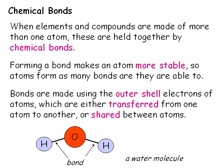The simple answer to why chemical bonds form between atoms is because they can. Atoms use their outer shell electrons to form bonds, becoming more stable as a result. The number of outer shell electrons an atom has limits the number of bonds it can form.